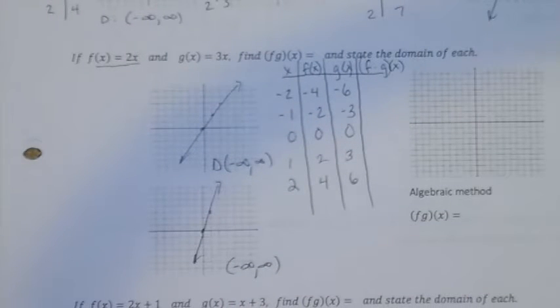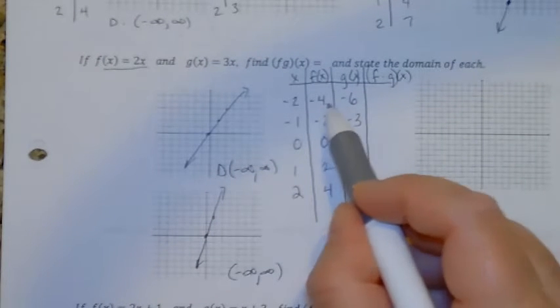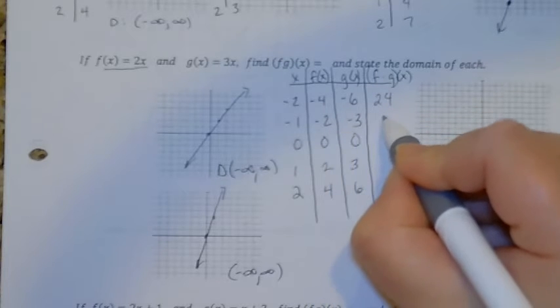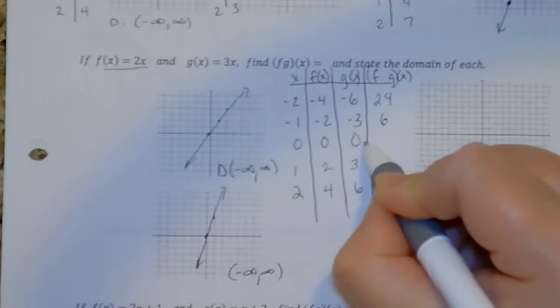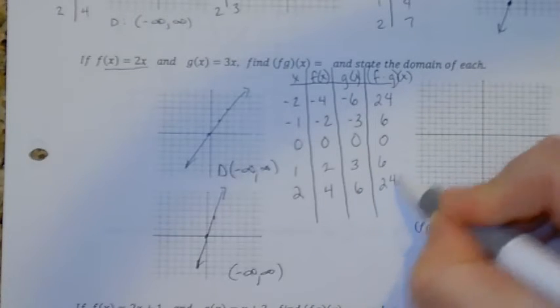But watch what happens whenever we graph the multiplication of those two functions. So if I multiply the outputs, I get 24. Multiply the outputs, I get 6. Multiply the outputs, 0. Multiply the outputs, 6. Multiply the outputs, 24.